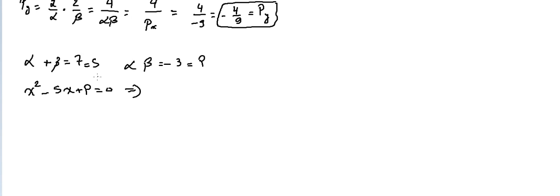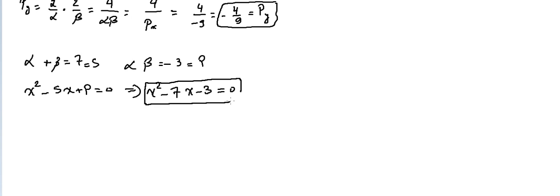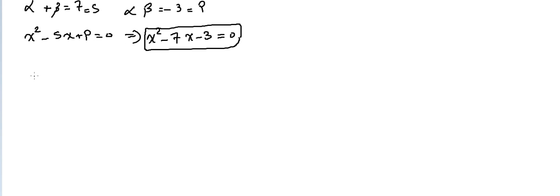We can form this quadratic equation: the sum is seven, so it's x squared minus seven x, plus the product which is minus three, equals zero. He gave us alpha and beta as roots with sum seven and product minus three. We can now find Delta: Delta equals b squared minus four ac.